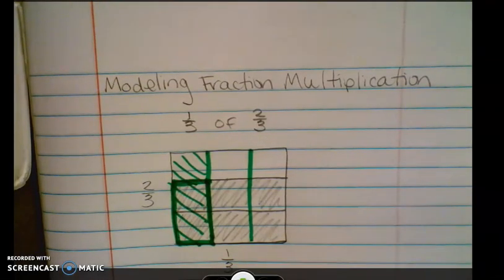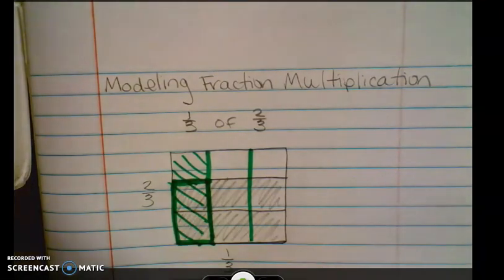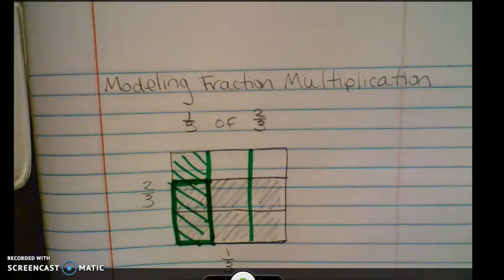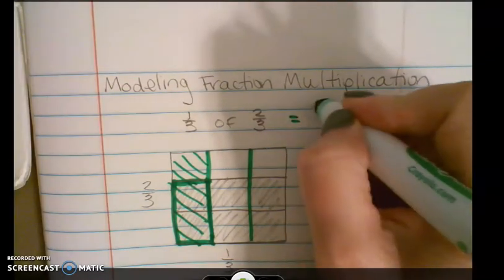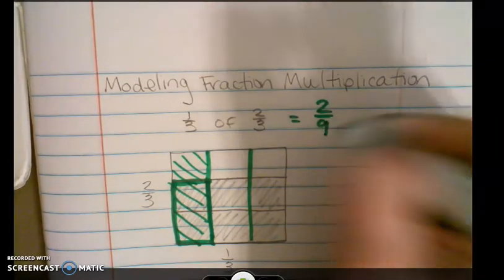So that answer is two out of nine. So one-third of two-thirds is two-ninths.